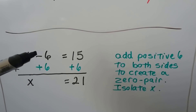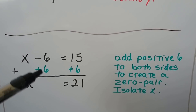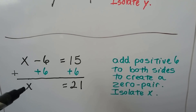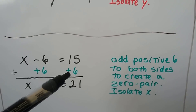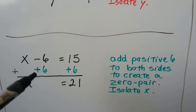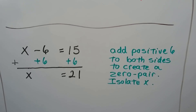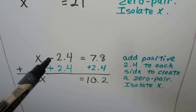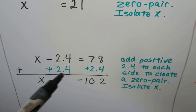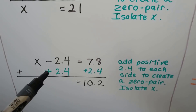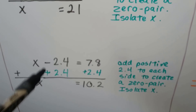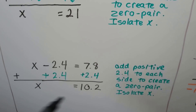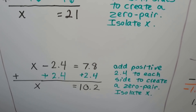Now we've got a subtraction problem. We're going to add a positive number to create a zero pair and get rid of this 6 — get this x by itself. When we add the 6 to this side of the equation, because we have to do the same thing to each side, we get x is 21. We can do it with decimals too: x minus 2.4 — we just add a plus 2.4 on each side, that creates a zero pair, and we get x equals 10.2.